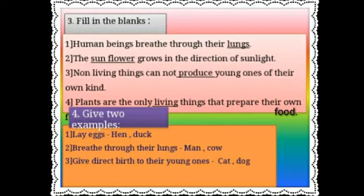Now the third question: fill in the blanks. First one: human beings breathe through their lungs. Second one: the sunflower grows in the direction of sunlight. Third one: non-living things cannot produce young ones of their own kind — the answer is produce. Fourth one: plants are the only living things that prepare their own food — the answer is living.